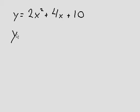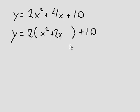In order to get started, in this case, because the a of this function, of this parabola, is 2 and not 1, I will have to factor it out. But I keep the 10 outside. So 2x squared divided by 2 is x squared. 4x divided by 2 is 2x.